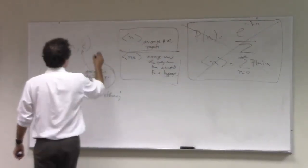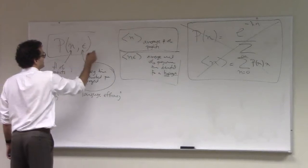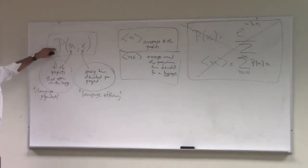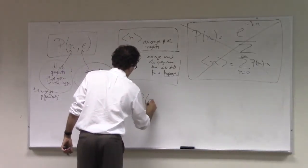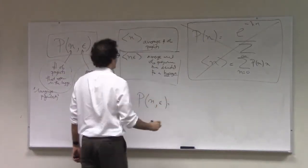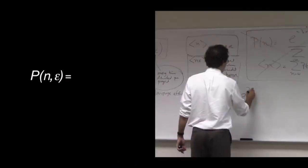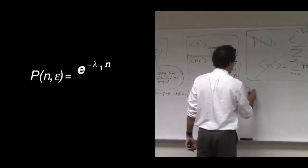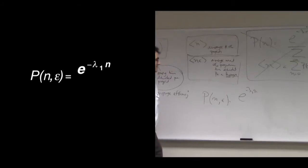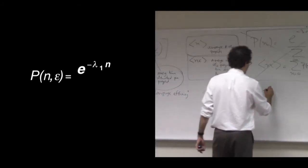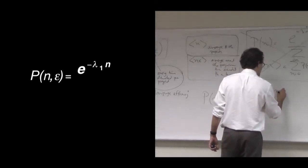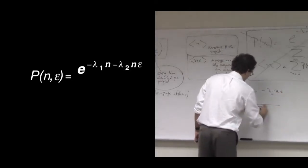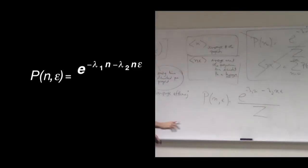So let's put in a maximum entropy distribution for this two-parameter model. We're going to constrain n, so we know that we have a term that looks like e to the negative lambda 1 times n. As before, e to the negative lambda 1 times n. And we're also going to have a term in the exponential that looks like lambda 2, that's the second Lagrange multiplier, times n times epsilon. And then of course there will be an overall normalization factor of z.